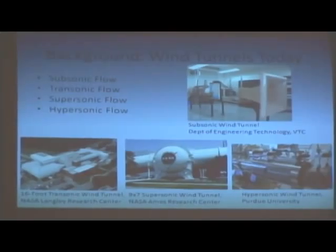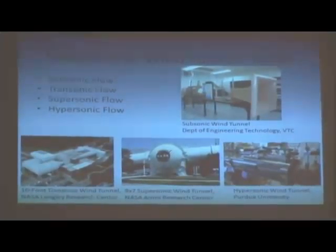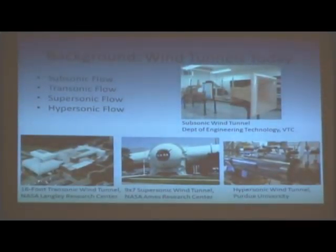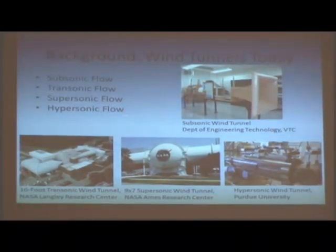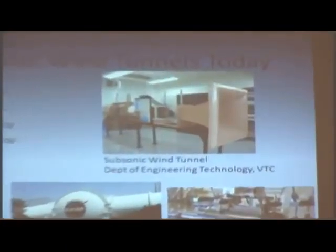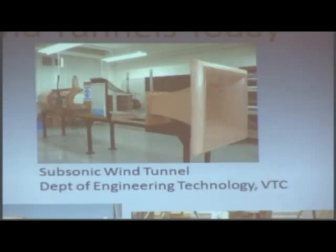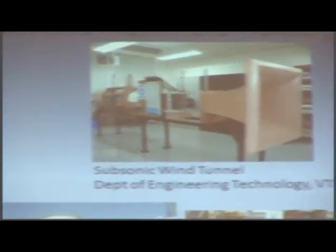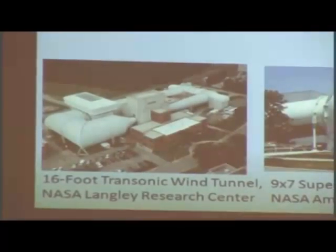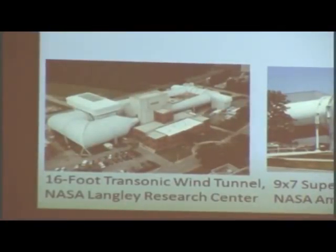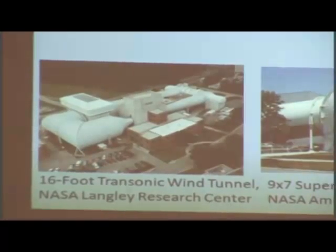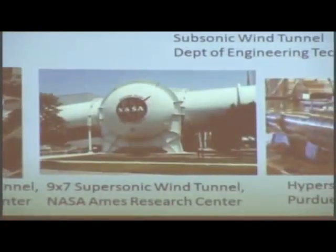There are a few types of airflow to focus on when you design or work in a wind tunnel: subsonic flow, transonic flow, supersonic flow, and hypersonic flow. Subsonic flow covers low speeds from zero up to about 500 meters per second. Transonic flow involves speeds similar or relative to the speed of sound. Supersonic flow is Mach 1 or above — Mach 1 being the speed of sound, Mach 2 being twice that, and so on.